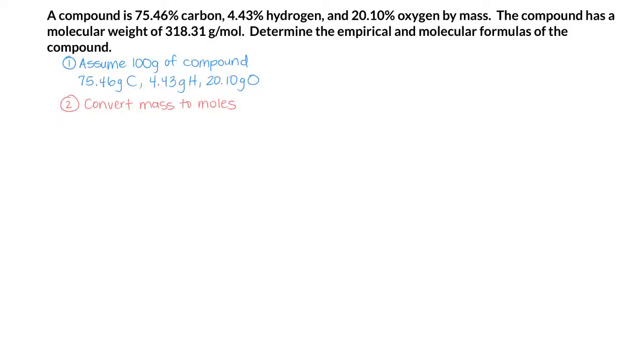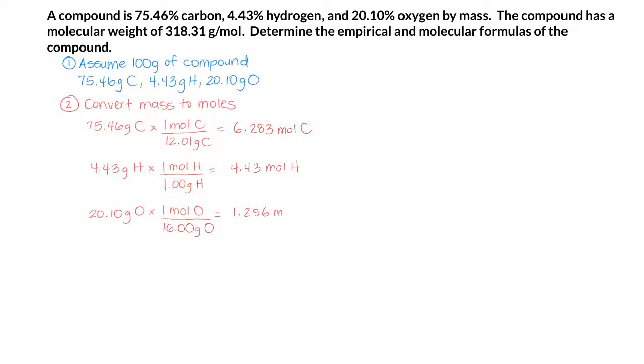Next we will convert the mass of each element into moles, using the molar mass that comes from the periodic table. The molar mass of carbon is 12.01 grams per mole, so we end up with 6.283 moles of carbon. The molar mass of hydrogen is 1 gram per mole, so we have 4.43 moles of hydrogen. And the molar mass of oxygen is 16 grams per mole, and that gives us 1.256 moles of oxygen.